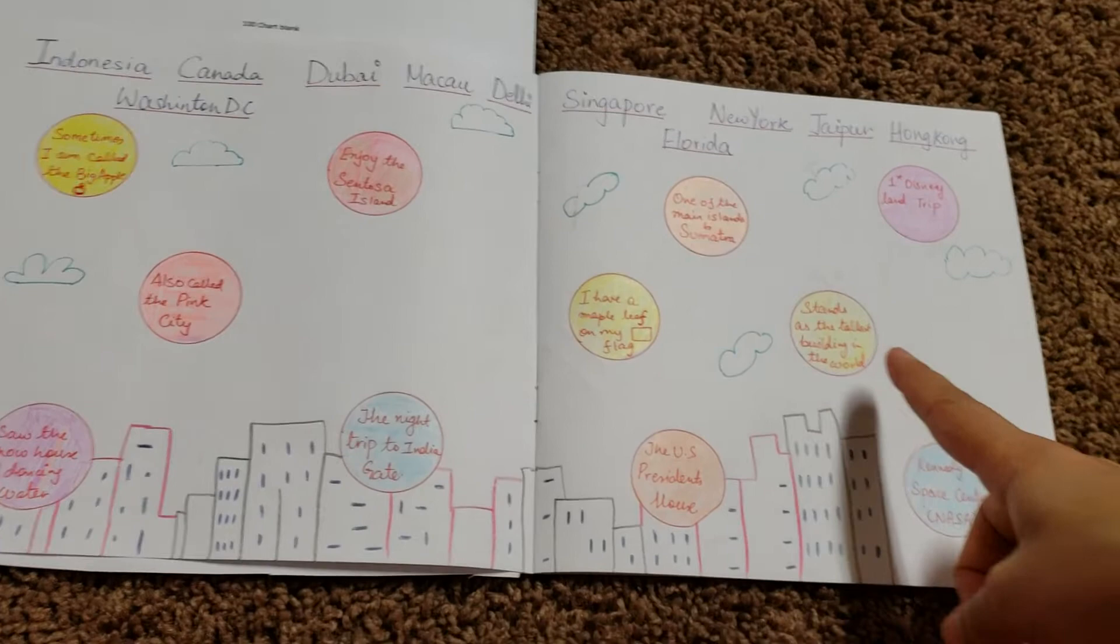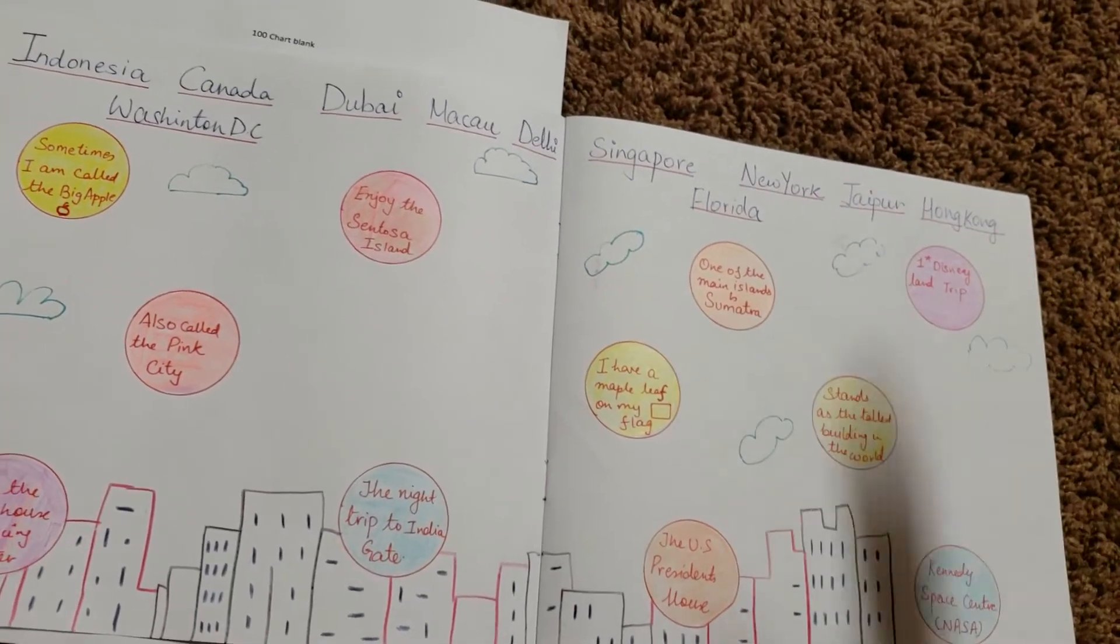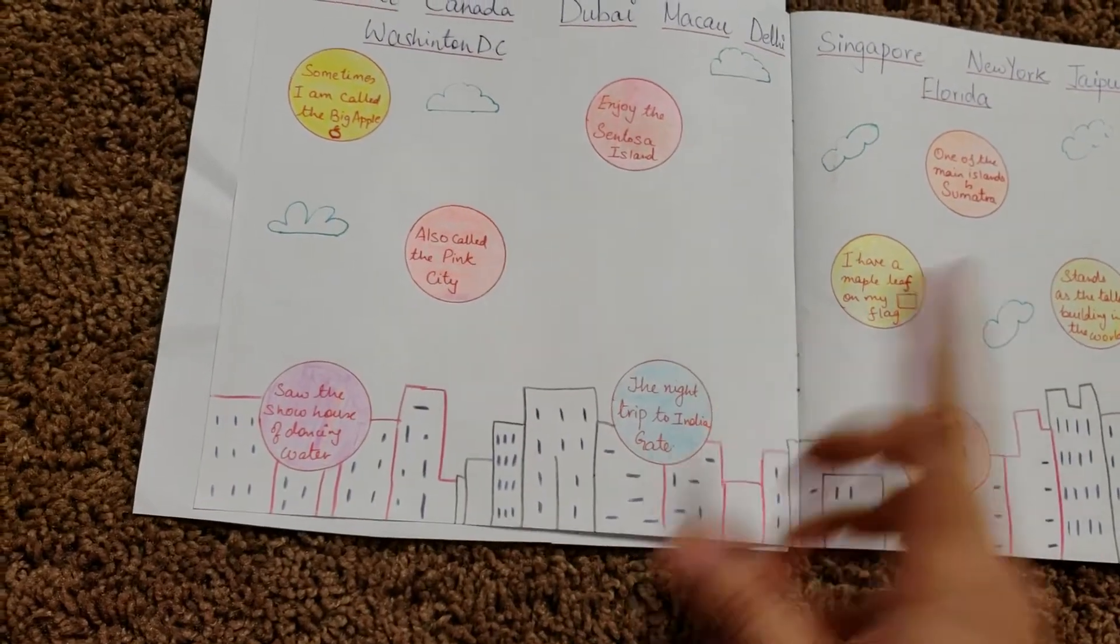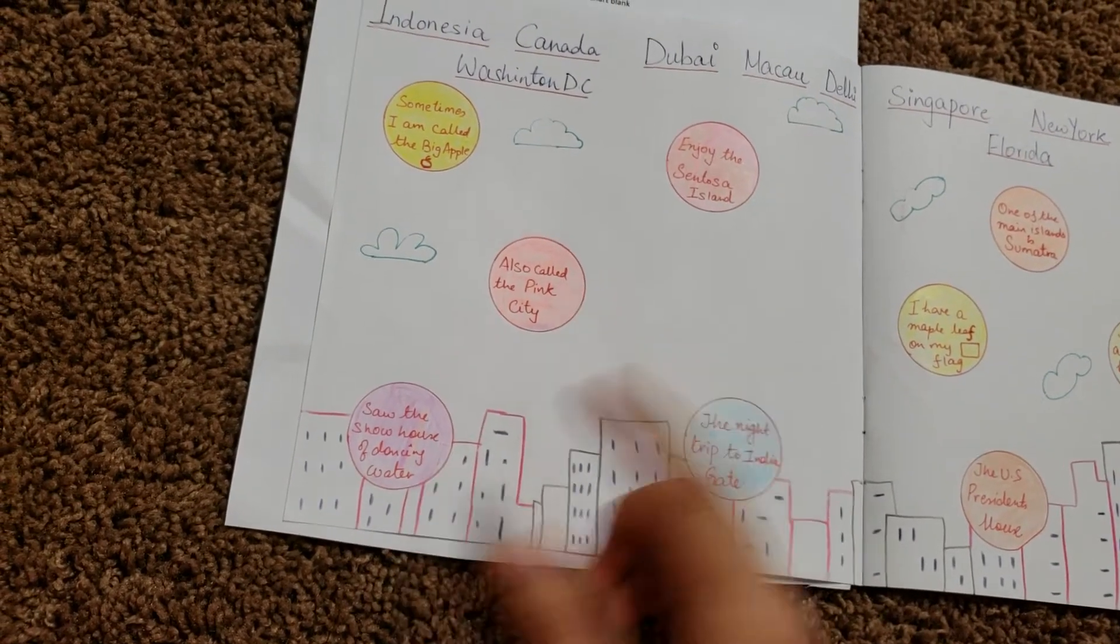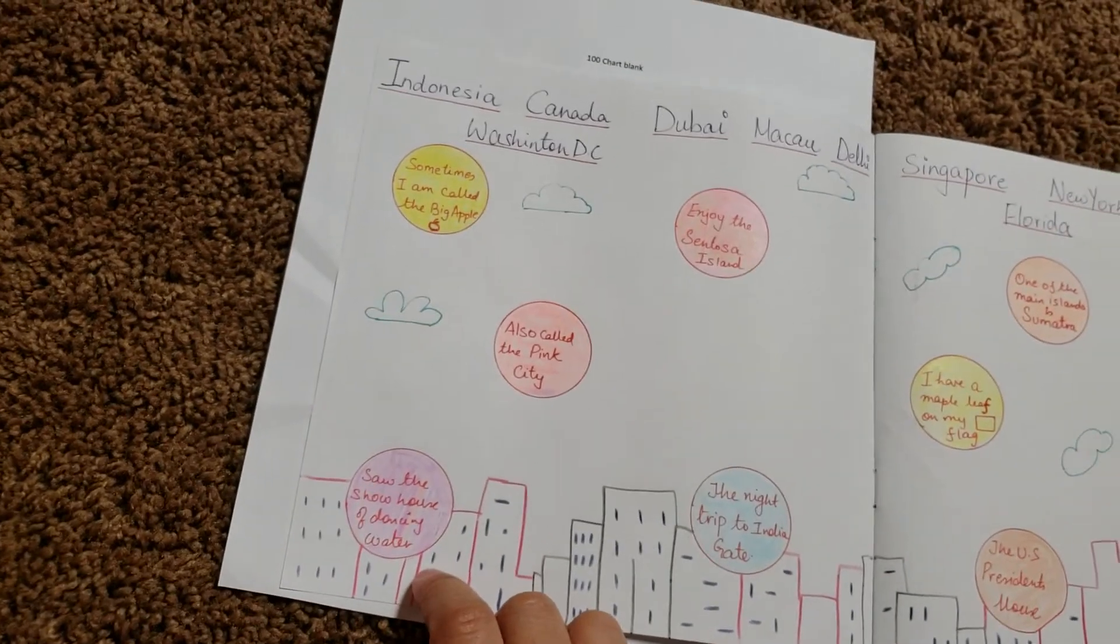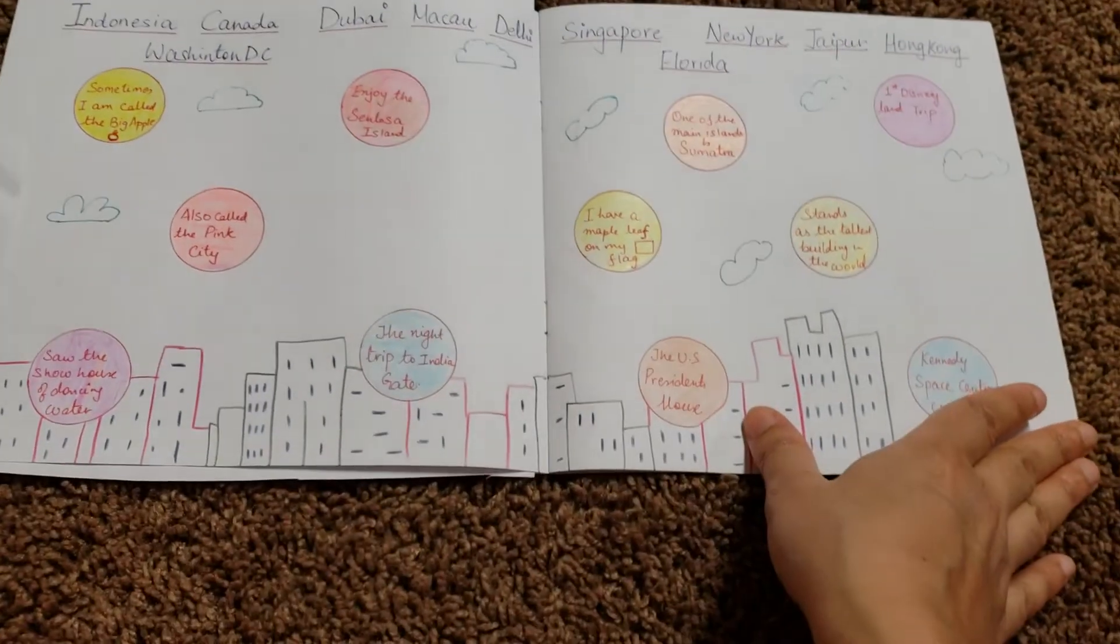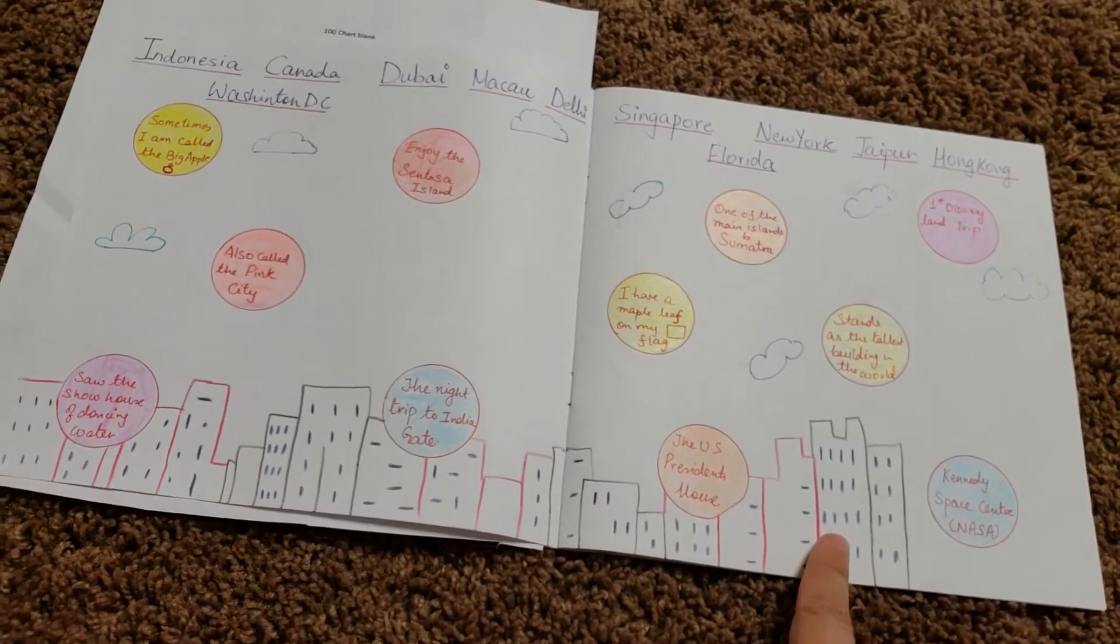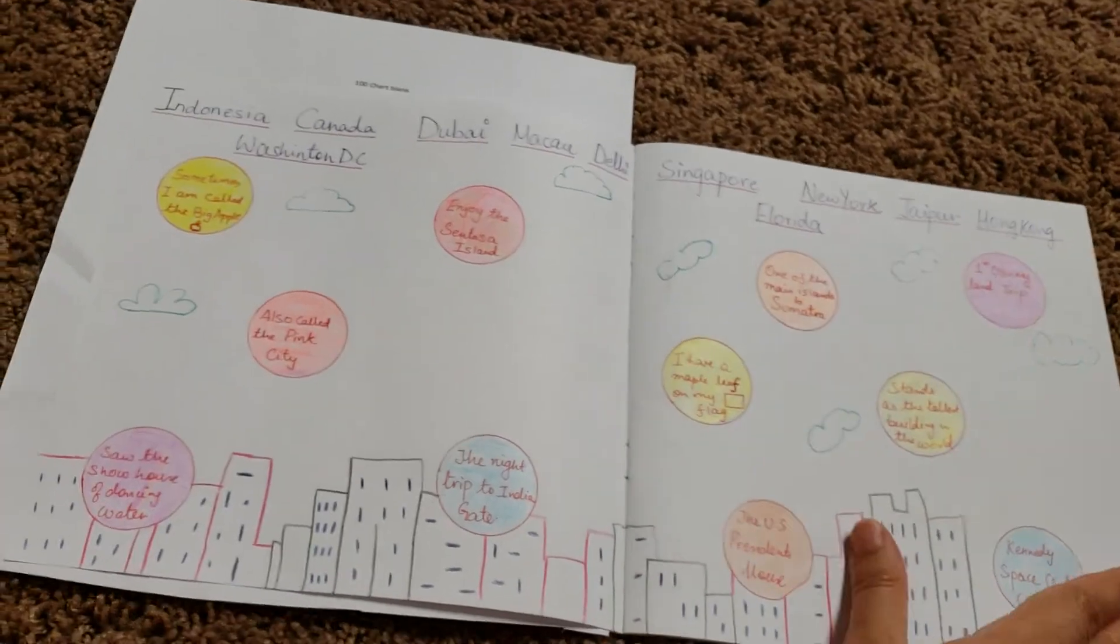So I have like a stands as the tallest building in the world. First Disneyland trip. One of the main islands is Sumatra. I have a maple leaf on my flag. The night trip to India gate. Saw the show house of dancing water. Also called the pink city. So yes, I have a lot of questions and a pretty dirty looking image here, which is trying to depict the buildings, but yeah, I think the activity is going to be fun.